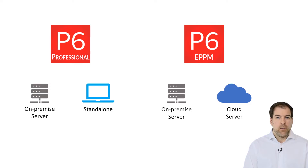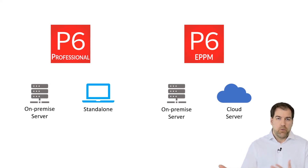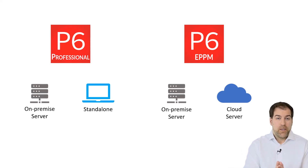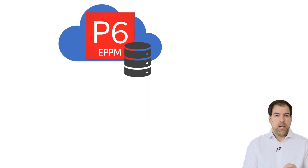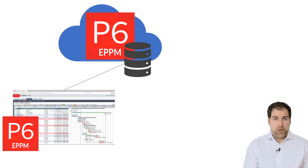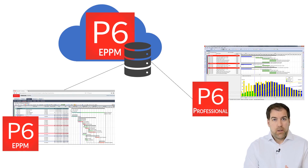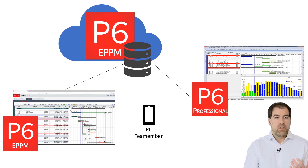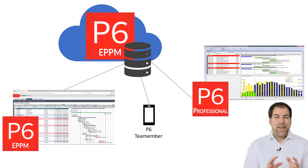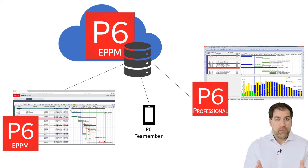For example, Oracle now has something called the Primavera Cloud Service — a subscription service where you can sign up and get access with a login. To confuse things a little bit more, if you have a cloud-based install of ePPM, you can connect to it using your browser, but you can also connect to it using Primavera P6 Professional. ePPM is more of a suite and P6 Professional is part of that suite. So as a P6 Professional user, you might be connecting to an ePPM database without even knowing it — find out what kind of install you've got.